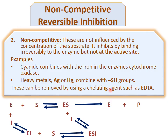The second type is non-competitive reversible inhibition. Non-competitive inhibitors are not influenced by the concentration of substrate, so substrate concentration does not matter. They do not bind at the active site, so there is no competition between substrate and inhibitor for the active site. Heavy metal poisoning, such as mercury and silver, is a common example, as these metals combine with thiol groups.